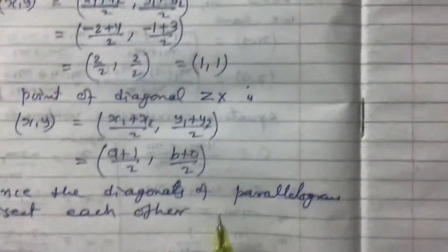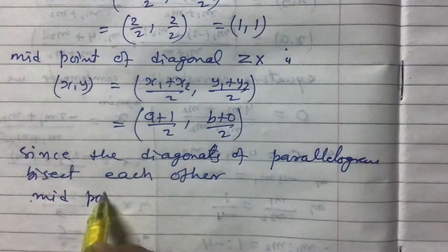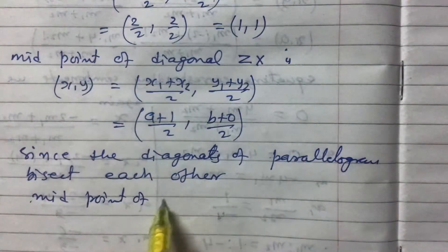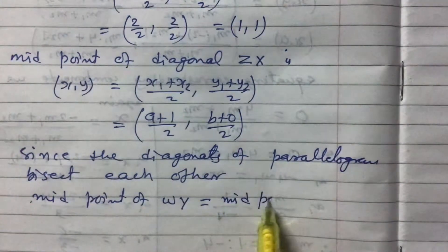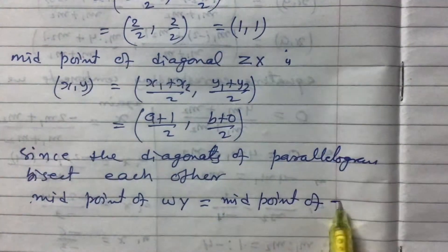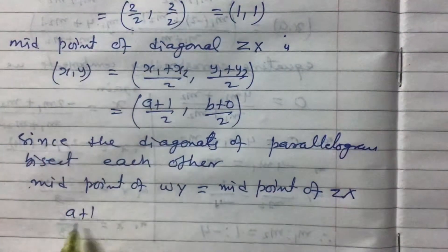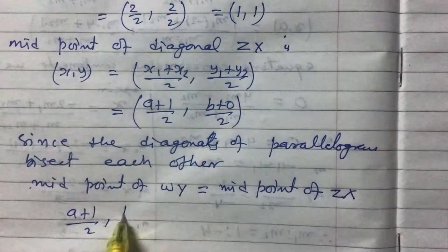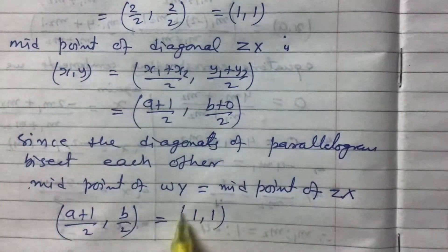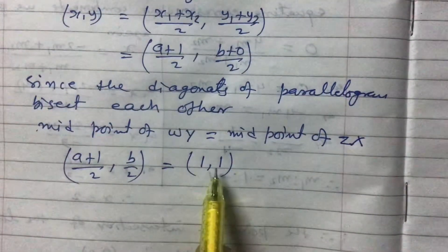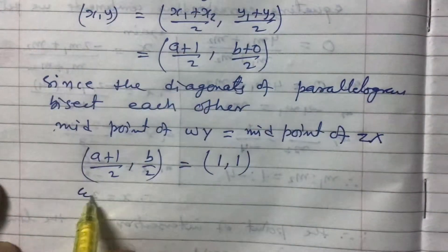By these segments being equal, we can equate both midpoints. So midpoint of WY equals midpoint of ZX. We write: (a+1)/2, b/2 equals 1, 1. This midpoint of ZX equals the midpoint of WY. Now equating corresponding components.